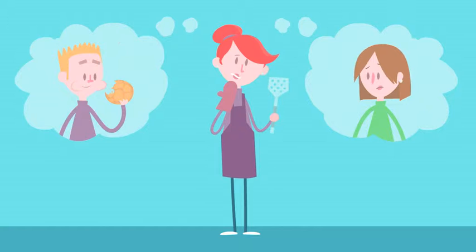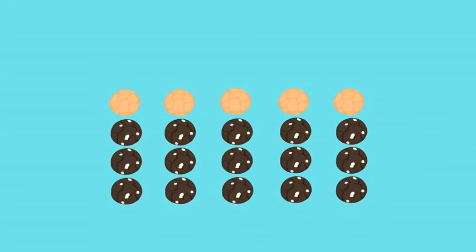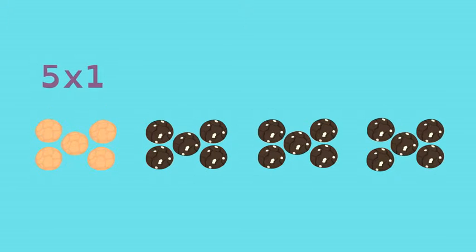But Carl's the only one that likes lemon, and Stacy doesn't eat sweets. So Lucy redistributes the cookies into 1 group of 5 lemon and 3 groups of 5 chocolate.